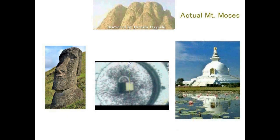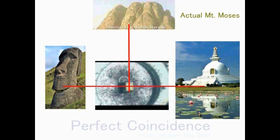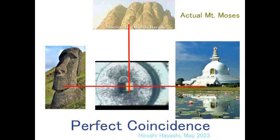And connect Easter Island with present-day Lumbini, which is said to be the birthplace of Buddha. The line exactly crosses the cube of Mecca Kaaba. The error at Mecca Kaaba cube is within 10 meters. In this way, Easter Island, Lumbini, and Mount Moses are connected by lines centering on Mecca Kaaba.